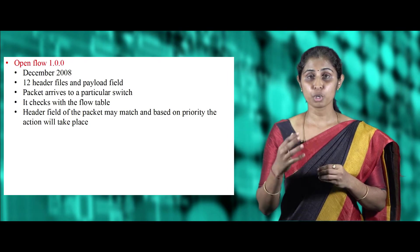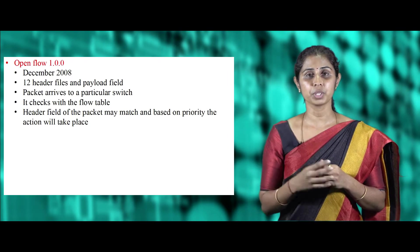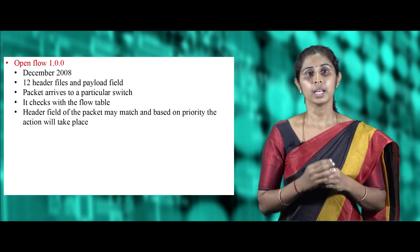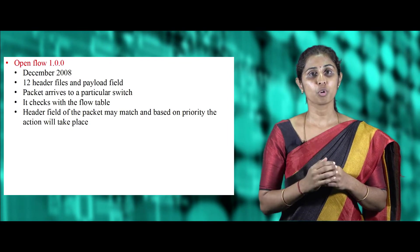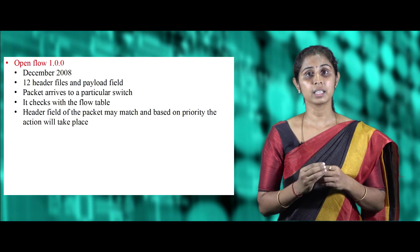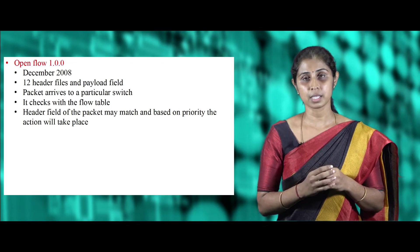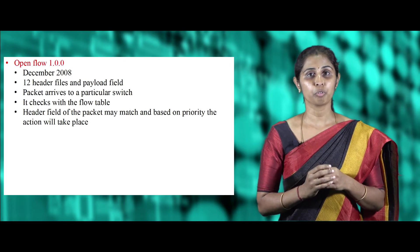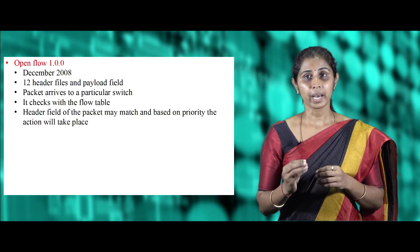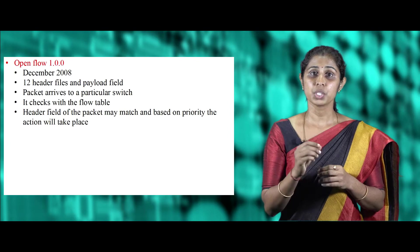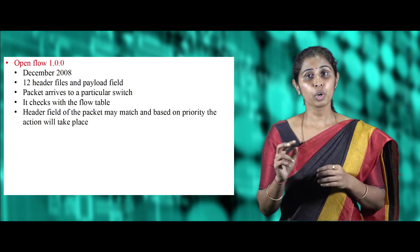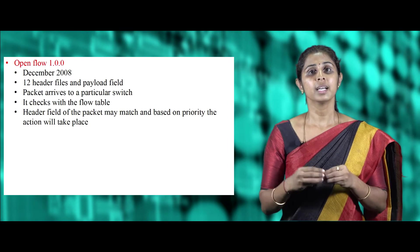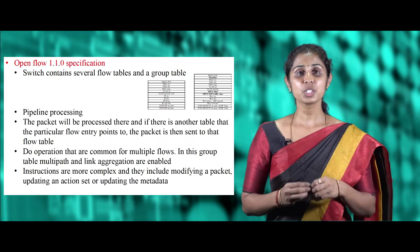The OpenFlow protocol specifications are available in different versions, with updates added in every version. The first version, OpenFlow 1.0.0, was released in December 2008. This specification supports 12 header fields and a payload field. When a packet arrives at a switch, it checks the flow table, and one or more header fields of the packet may match, based on which an action takes place.